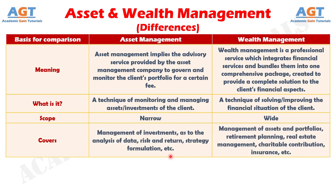Number 4: Wealth management covers financial planning, tax planning, portfolio management, asset management, estate planning, legal planning, retirement planning, risk management, etc. On the other hand, asset management involves gleaning and analysis of data, risk return analysis, forecast, strategic planning and implementation, identification of appropriate investment vehicles, etc.